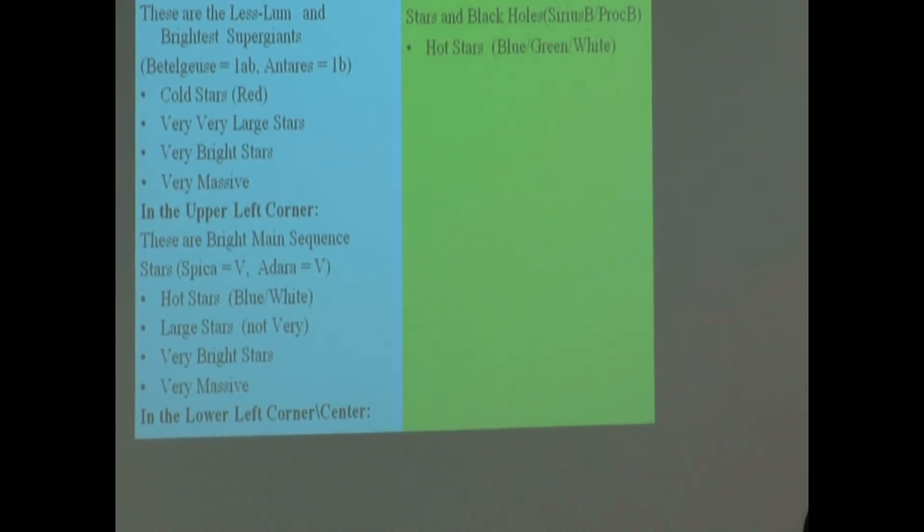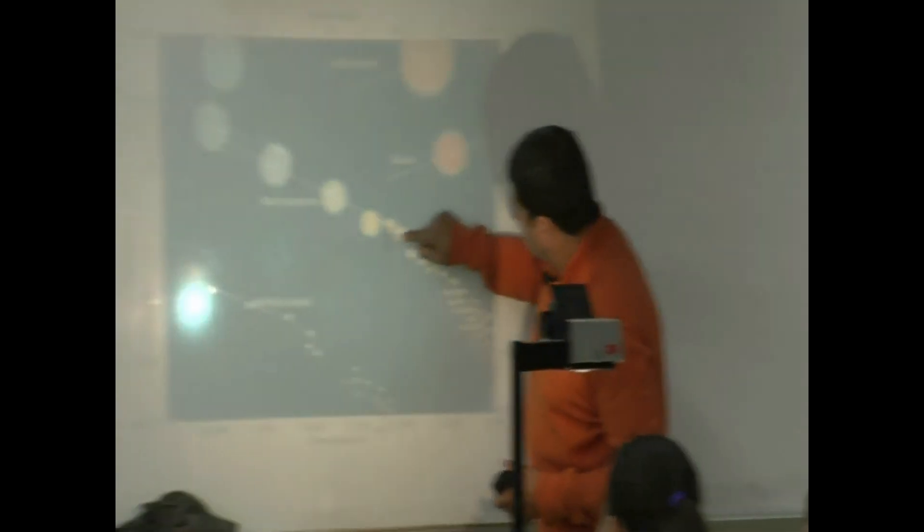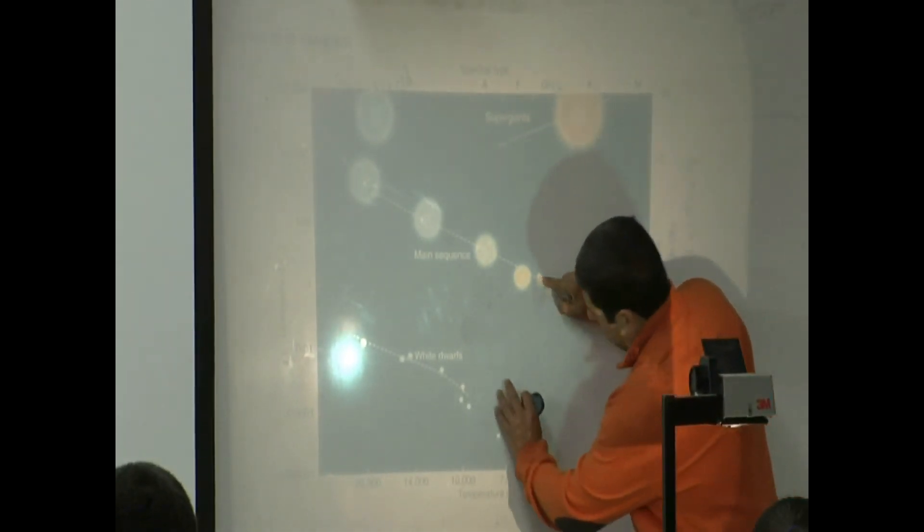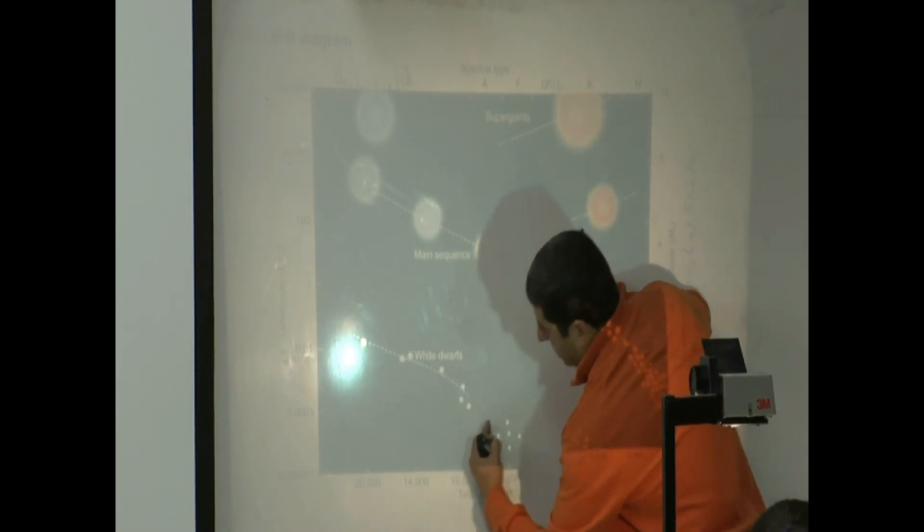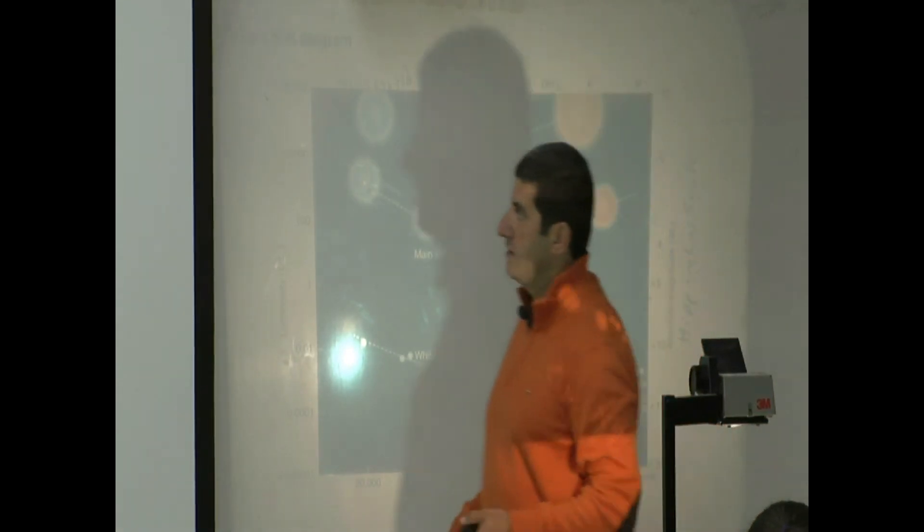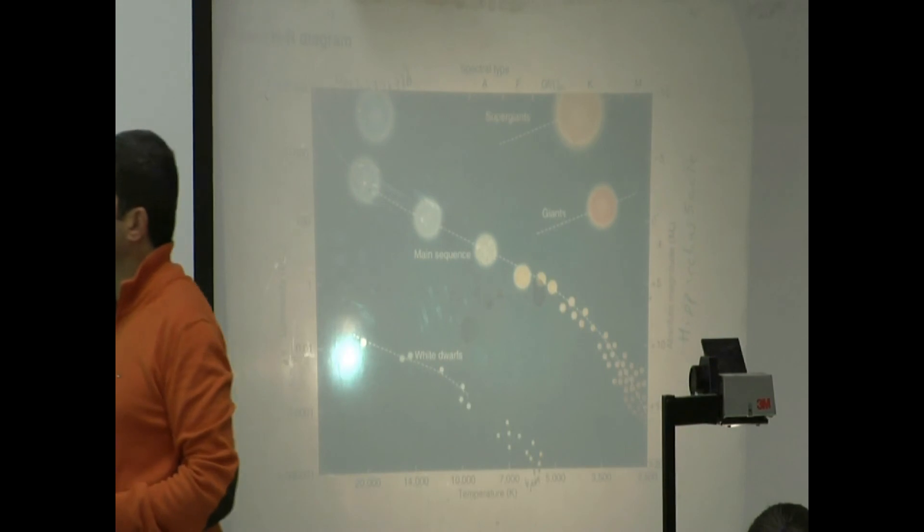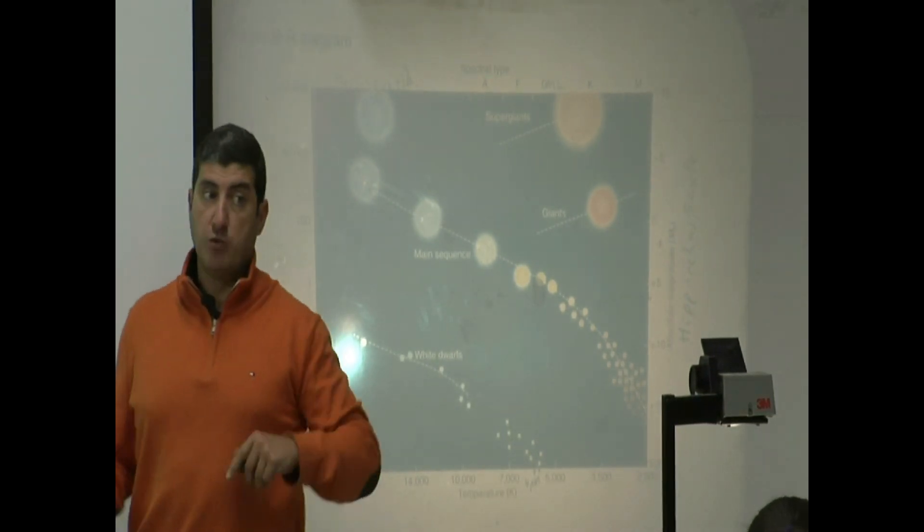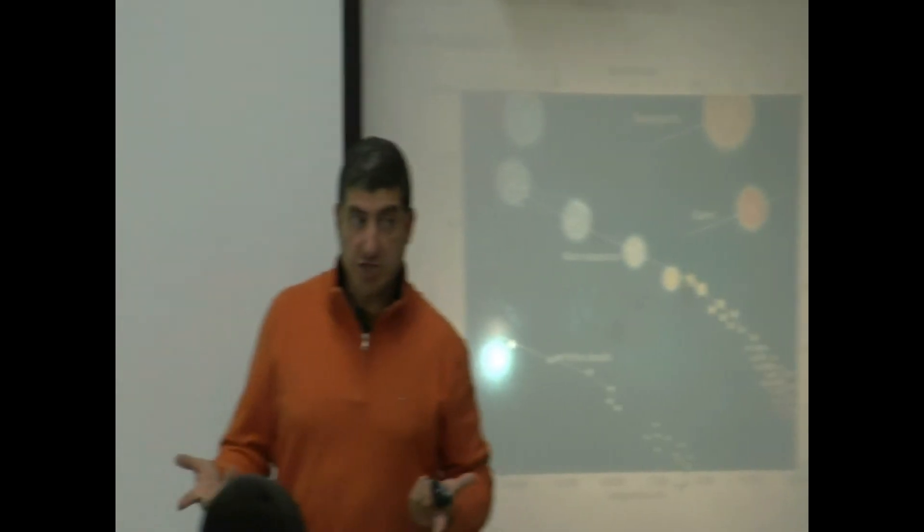So what do we expect of them? We expect them to be hotter than the Sun. You see, this is the Sun somewhere here, so we expect them to be hotter. They're on the left side. They're very small, maybe one hundredth the size of the Sun, one thousandth the size of the Sun.